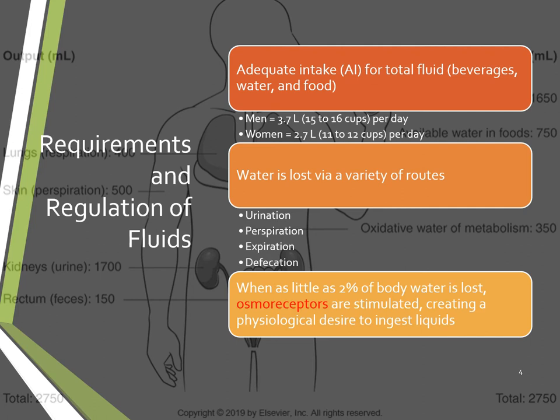Water is lost via a variety of routes: urination, perspiration, expiration, and defecation. When as little as 2% of body water is lost, osmoreceptors are stimulated, which creates a physiological desire to ingest liquids. In healthy adults, this is considered thirst. Thirst is the earliest sign of the body's need for fluids, but a lot of times people mistake thirst for hunger.